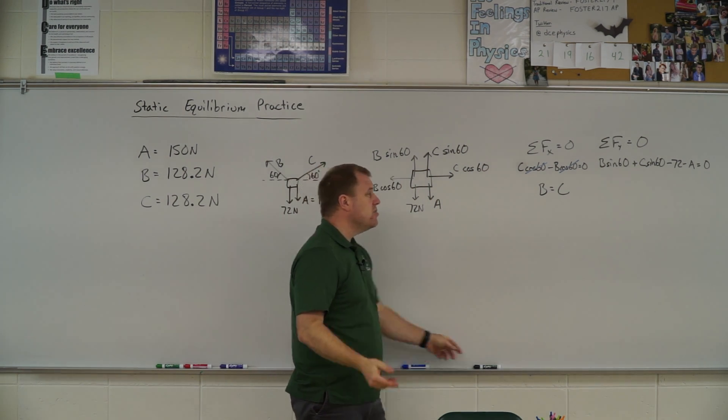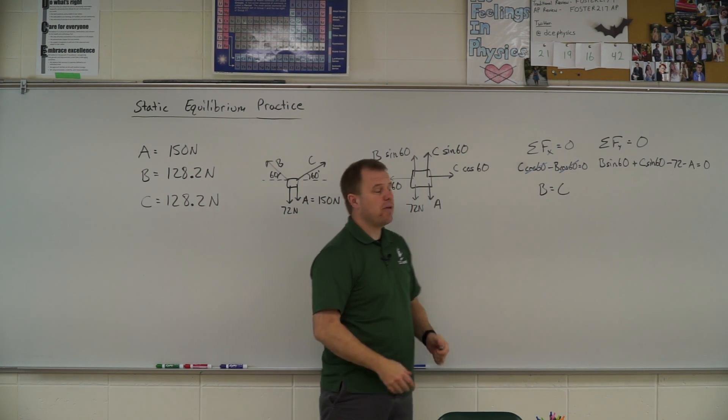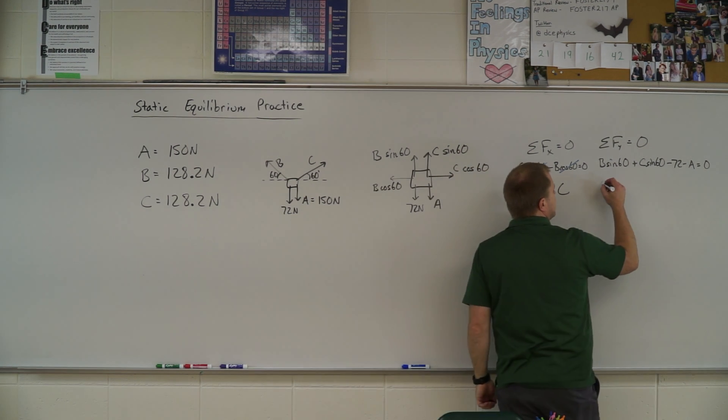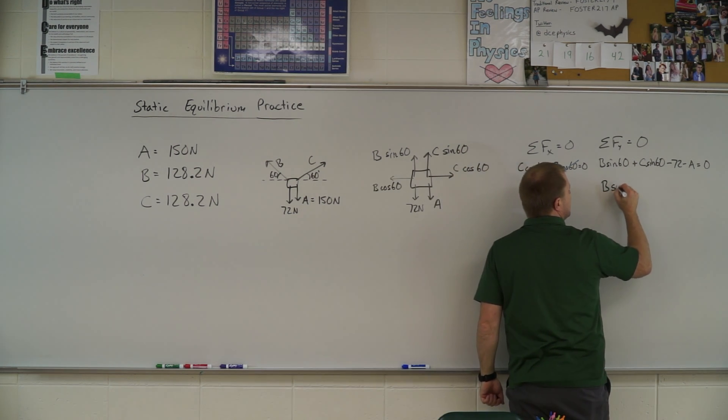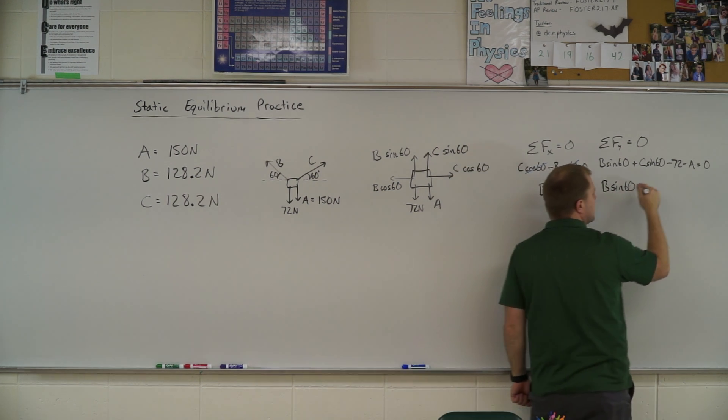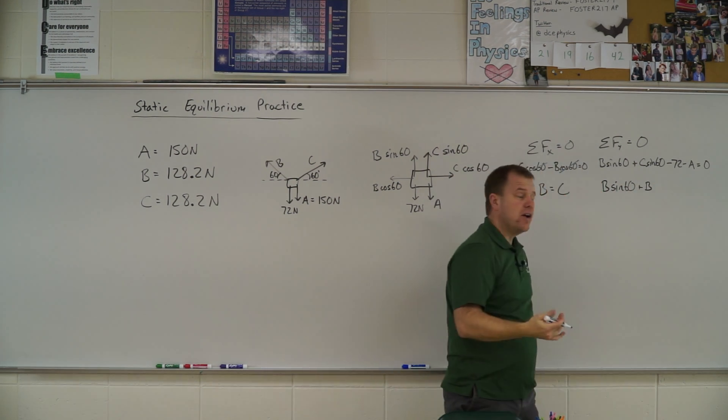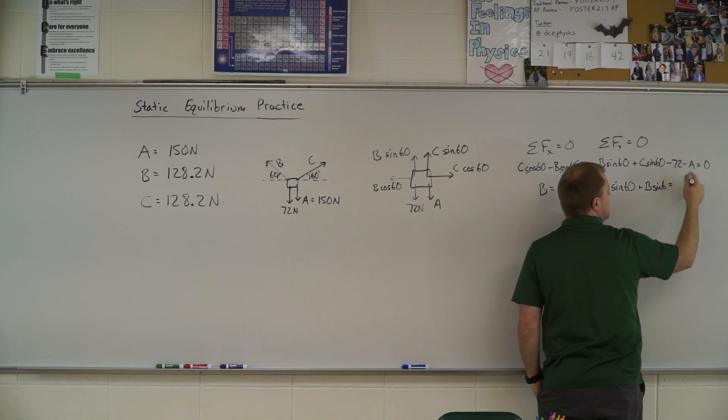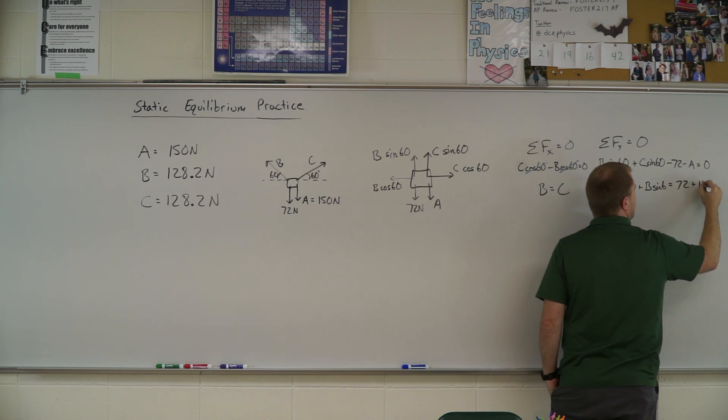Now I can use that to substitute into my Y direction. I add the ups and the downs are minus, so here I can say instead of writing C I can write B because they are equivalent. So now I only have one unknown in here, so B sine 60 equals 72 plus 150.